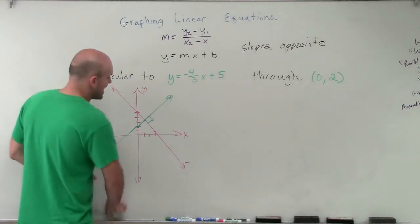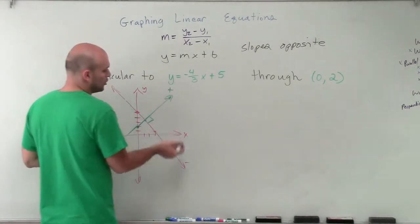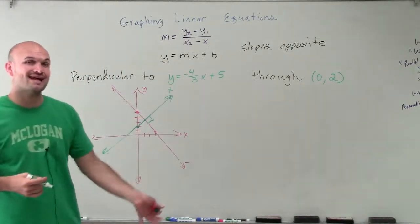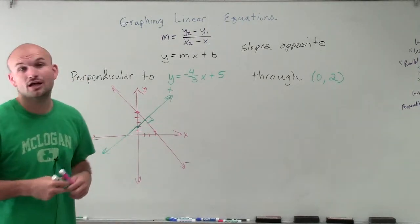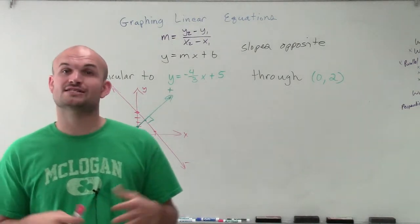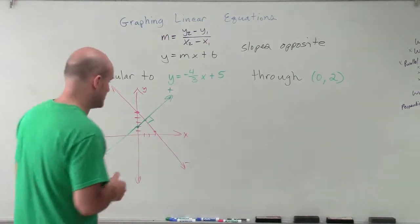we already know that perpendicular lines have to have opposite slopes as far as their sign. If one's negative, the other one has to be positive. And the other thing we learned about perpendicular lines is their slopes are reciprocals of one another.